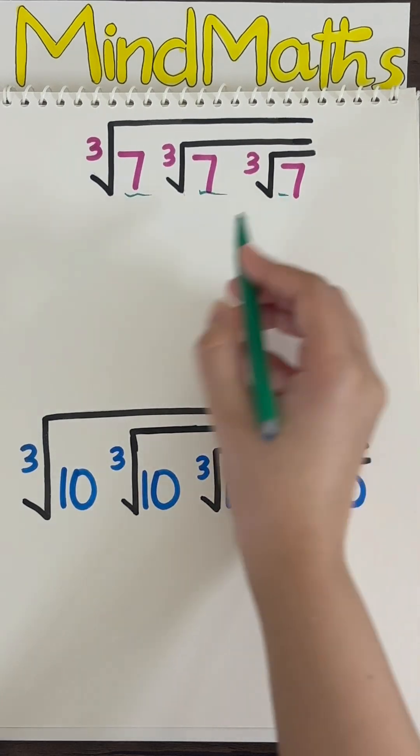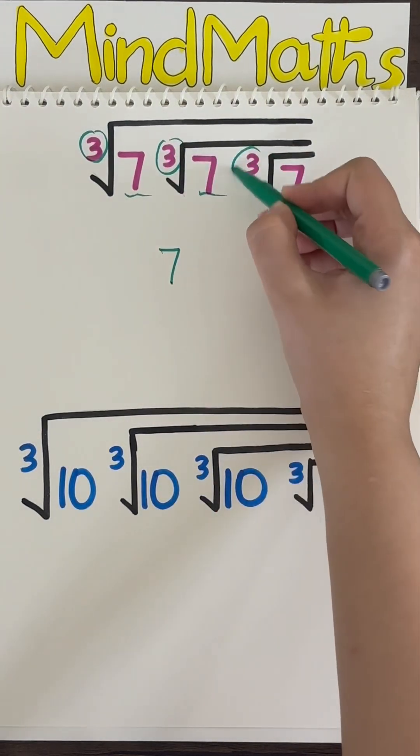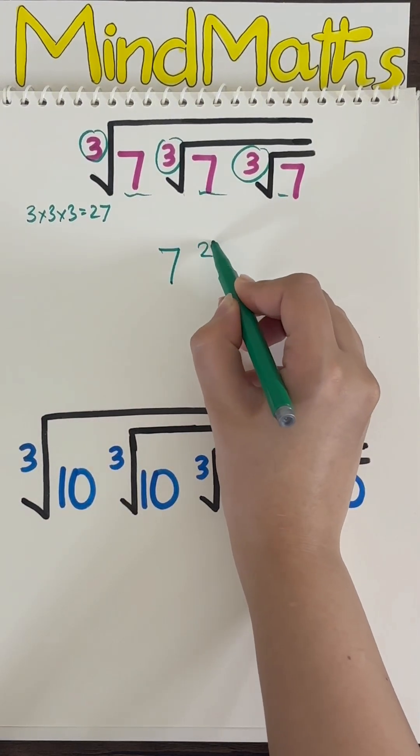First, take the number inside the square root as common, which is 7. Then multiply 3 by 3 by 3. It becomes 27. Now you have to write it in the form of a power, placing it as an exponent.